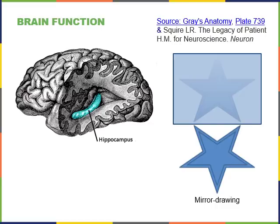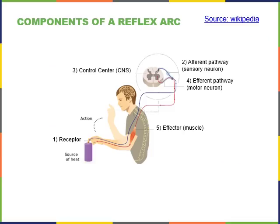A famous test Milner used is the mirror drawing task. In this test, H.M. was asked to draw between the lines within a star pattern without directly looking at his hand, but instead using a mirror to look at a reflection of his hand. This task is difficult, but with practice H.M. was able to improve. While he was able to learn this skill by forming what we now call a procedural memory, he never formed a memory of the event, and he would remark with surprise after performing well on the task, having no memory of his practice. This gave us insight into the functions of the brain, a major component of the central nervous system.